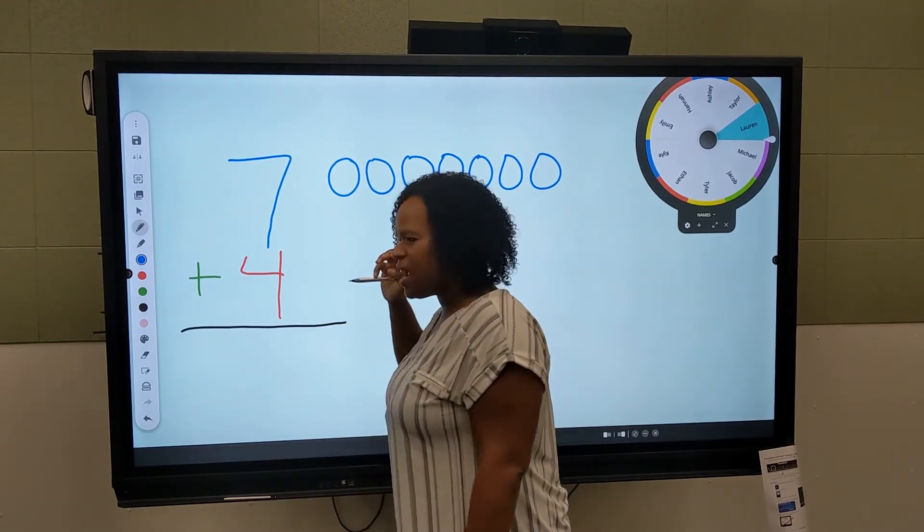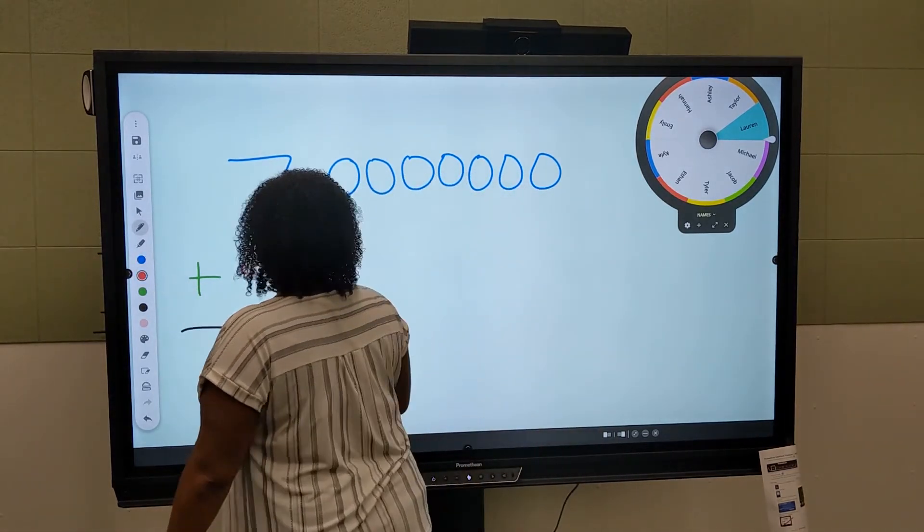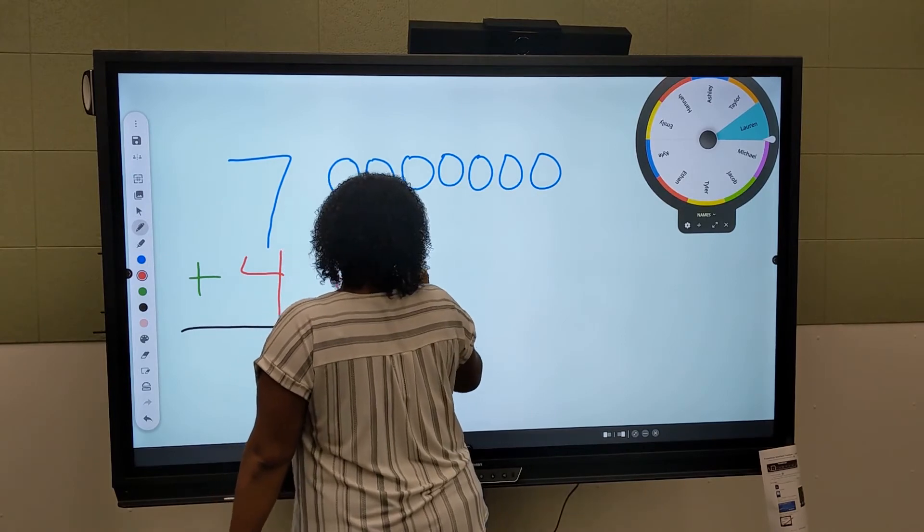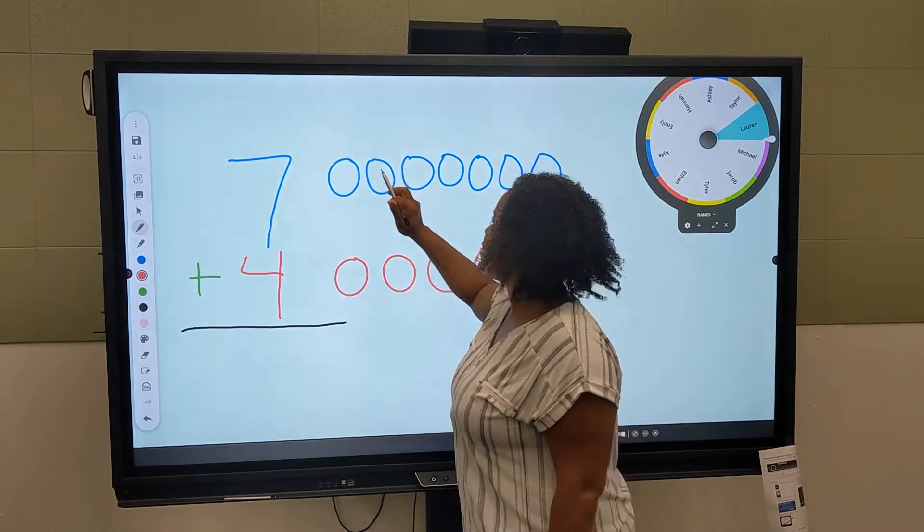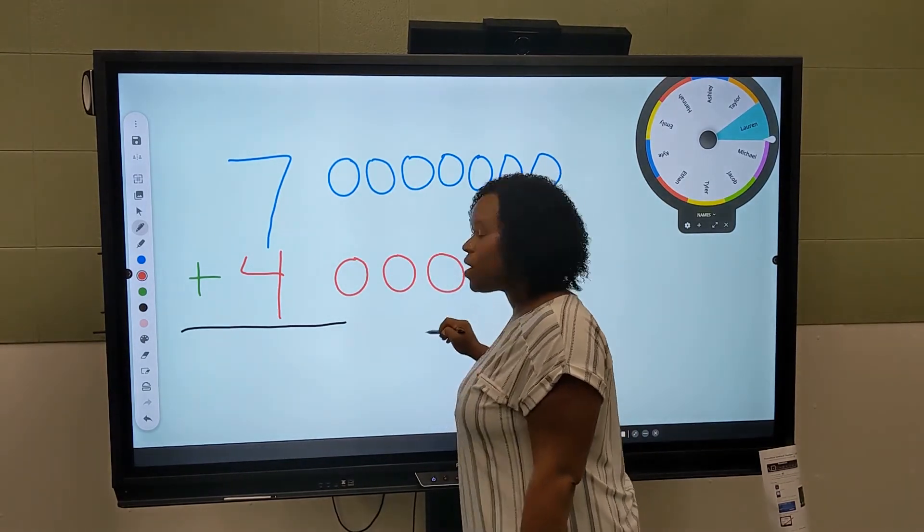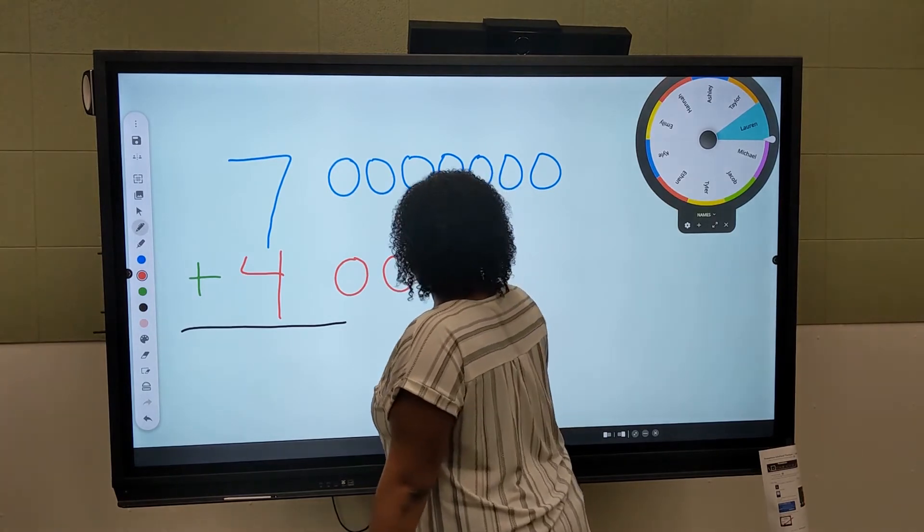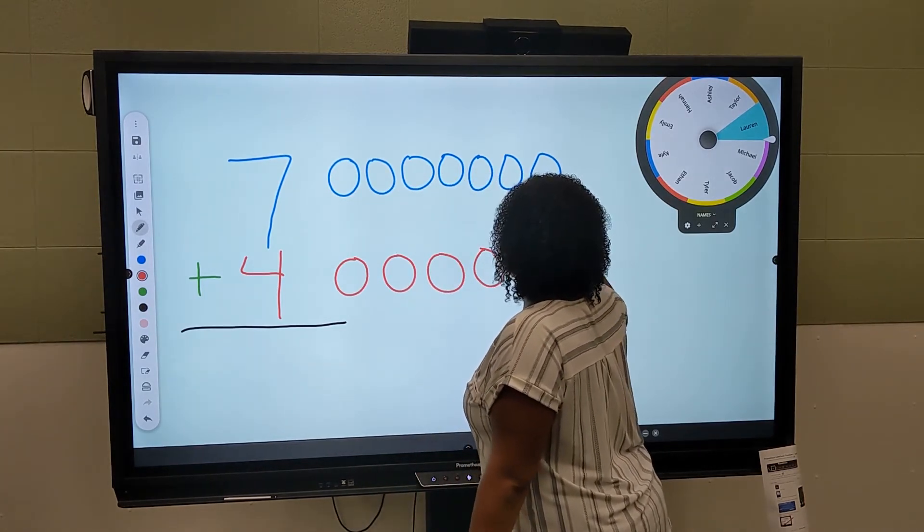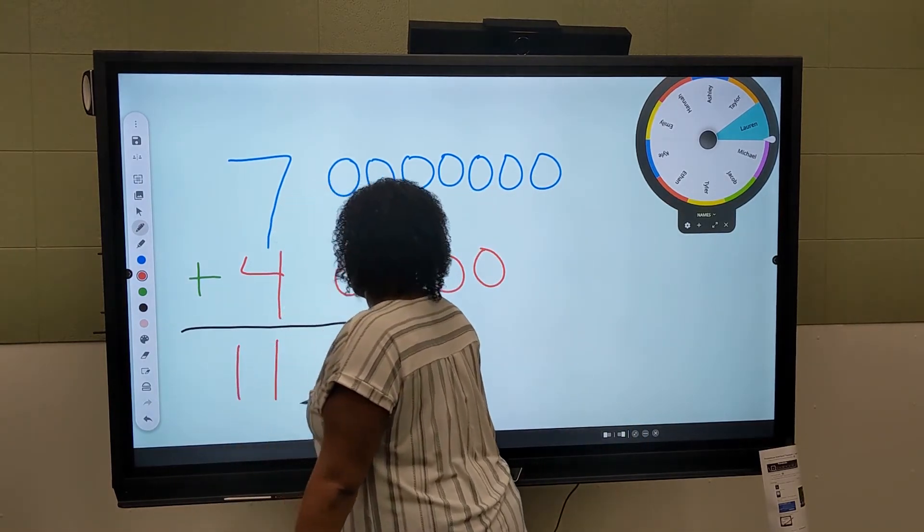Then I drew four more. Let's count together, four more: one, two, three, four. And when I added seven counters plus four counters, I got one, two, three, four, five, six, seven, eight, nine, ten, eleven. And so I wrote eleven for my answer.